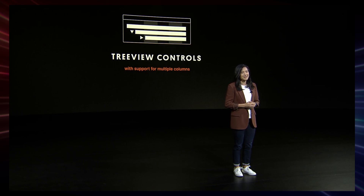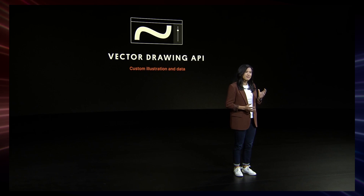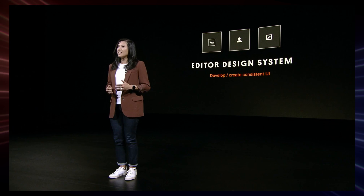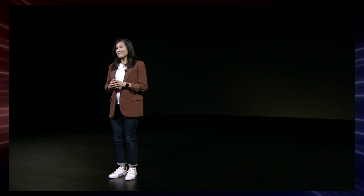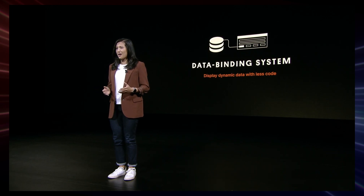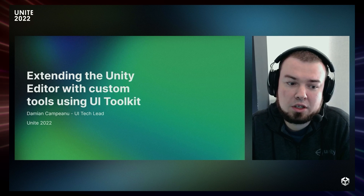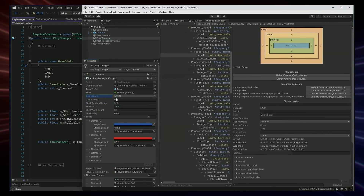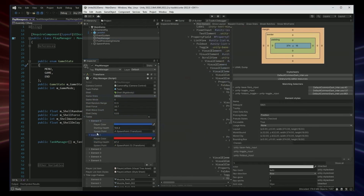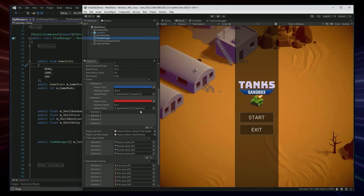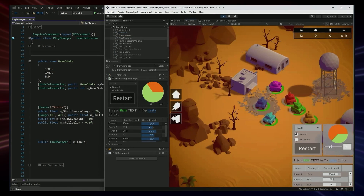They've also added three view controls, a vector drawing API, and a new editor design system for modern and consistent UI. And coming soon in 2023, Unity will be adding a new data binding system to display dynamic data in your UI with less code. The extending the UI editor talk used an editor UI inspector to showcase how the editor UI is fully rendered by UI Toolkit in Unity 2022.2 and converted a component that had default inspector elements into something fully customized. You can find a link to this talk in the description.